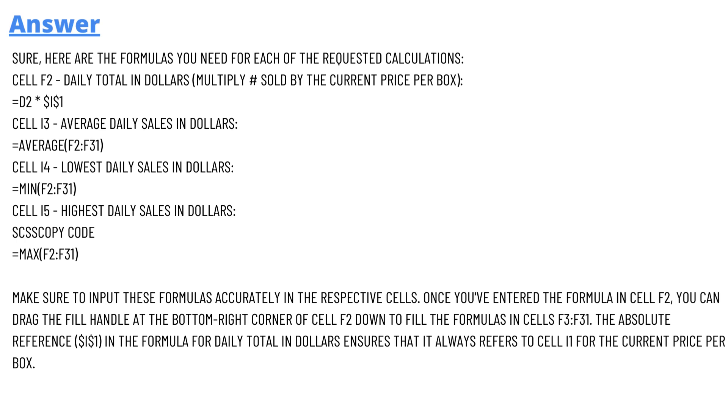To calculate the minimum sales, you use the MIN function with F2 through F31. Same goes for the highest, and the formula is MAX with the same range. These are the three formulas that we need to use to calculate it.